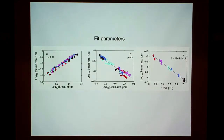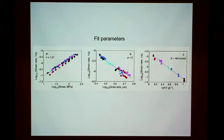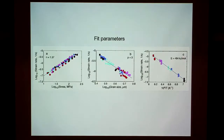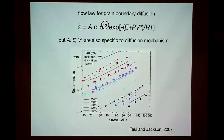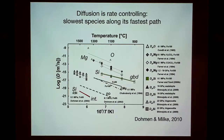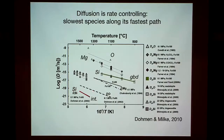I can measure grain size before and after the experiment, but during the experiment I have to calculate it. At those low strain rates, I'm sitting long enough at temperature that I actually have grain growth, so I have to take that into account — that's a source of error and scatter. The activation energy actually looks pretty nice; there's no reason to think it changes over the 1150 to 1350°C range, which is fairly wide for what's typically done experimentally.